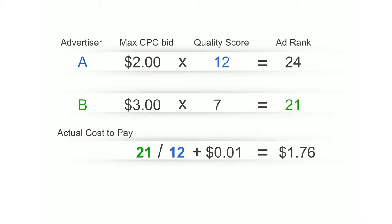So as a result, if a user clicks on advertiser A's ad, he'll pay $1.76. This amount is then divided between the publisher and Google.